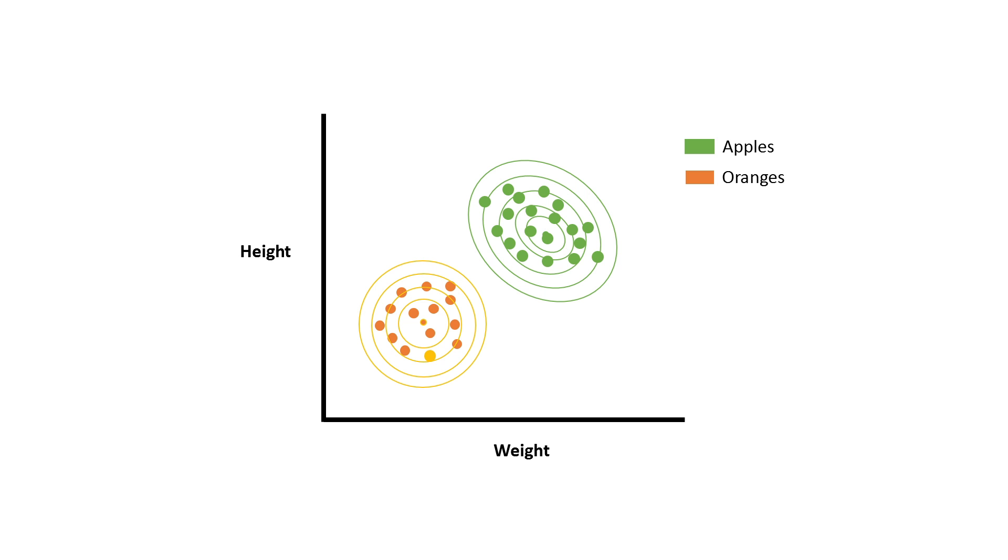Let us now go through some math of how Gaussian Mixture Models work. Take a single observation. The probability of observing this observation x is given as the probability of a data point belonging to the apple class times us observing x given it being in the apple distribution, plus the probability of the data point belonging to the orange class times the probability of observing x given that it belongs to the orange distribution.